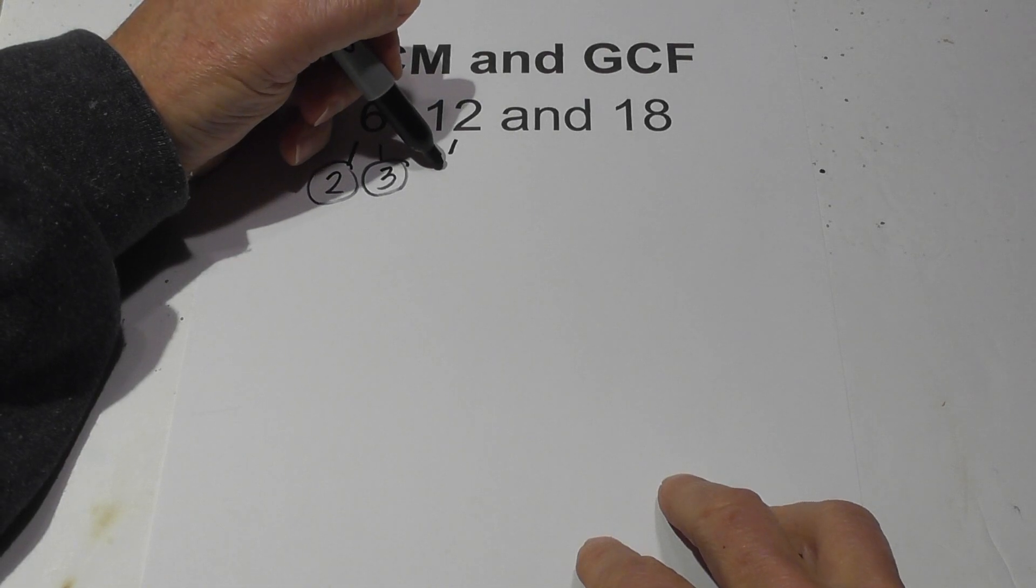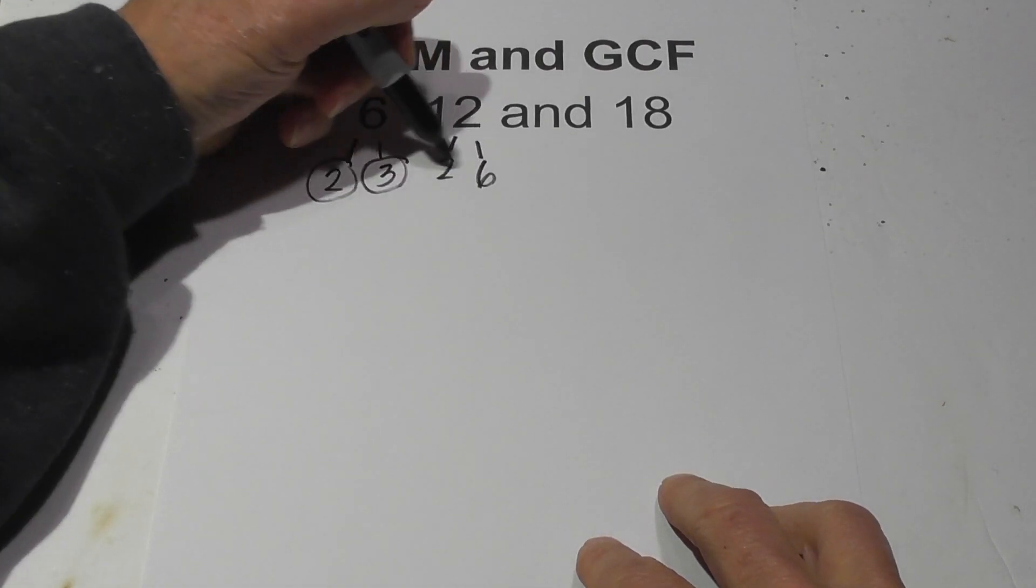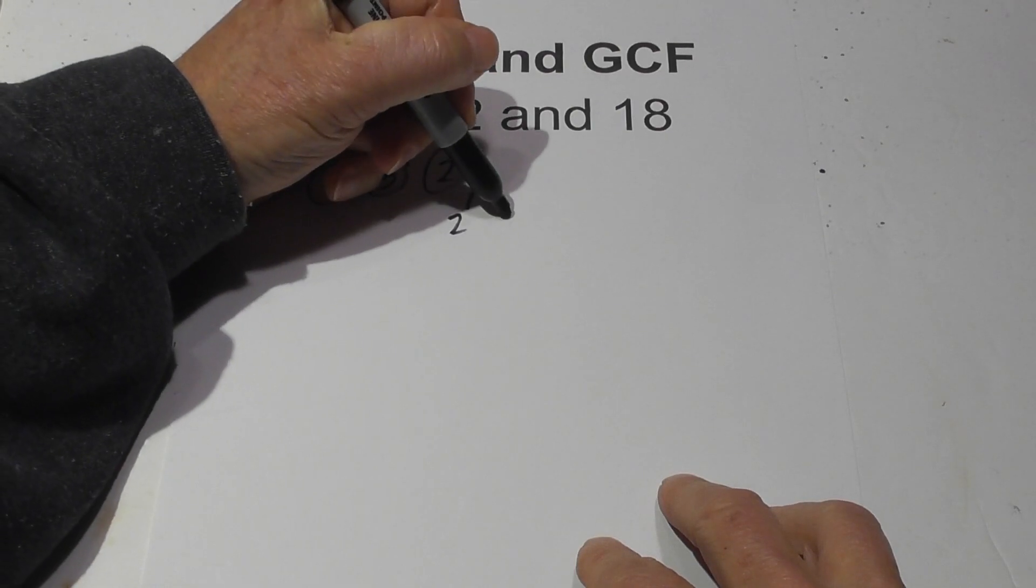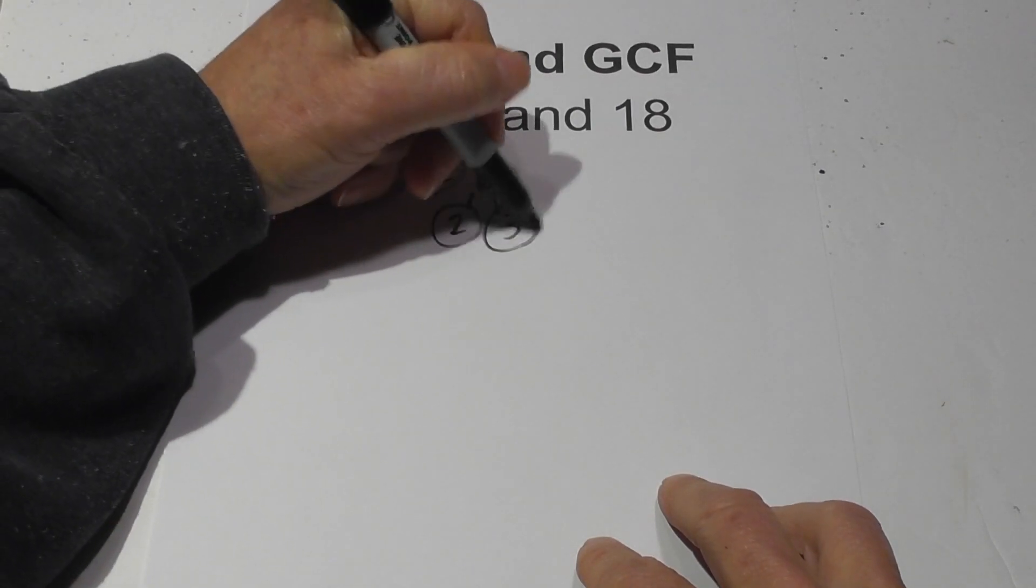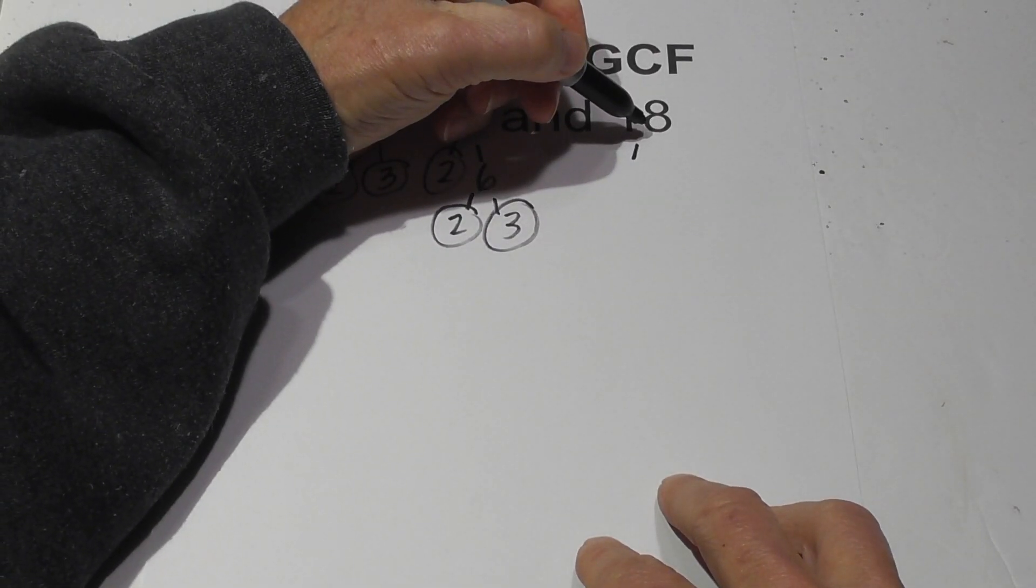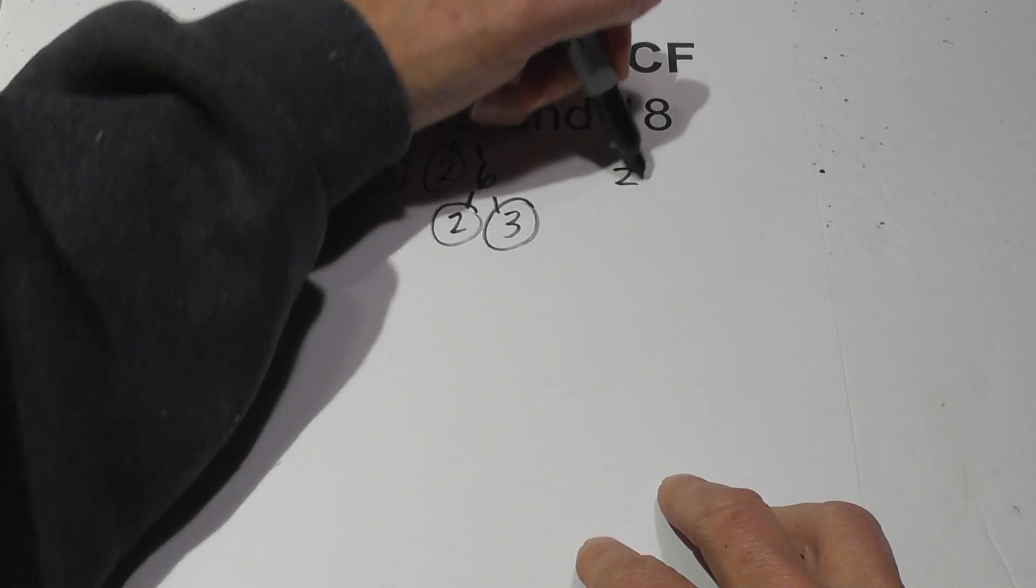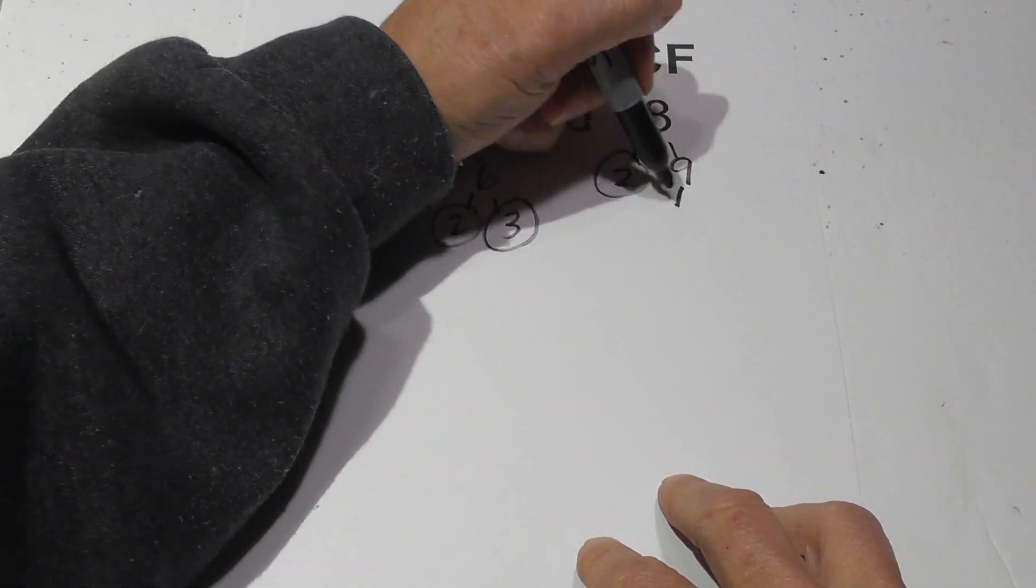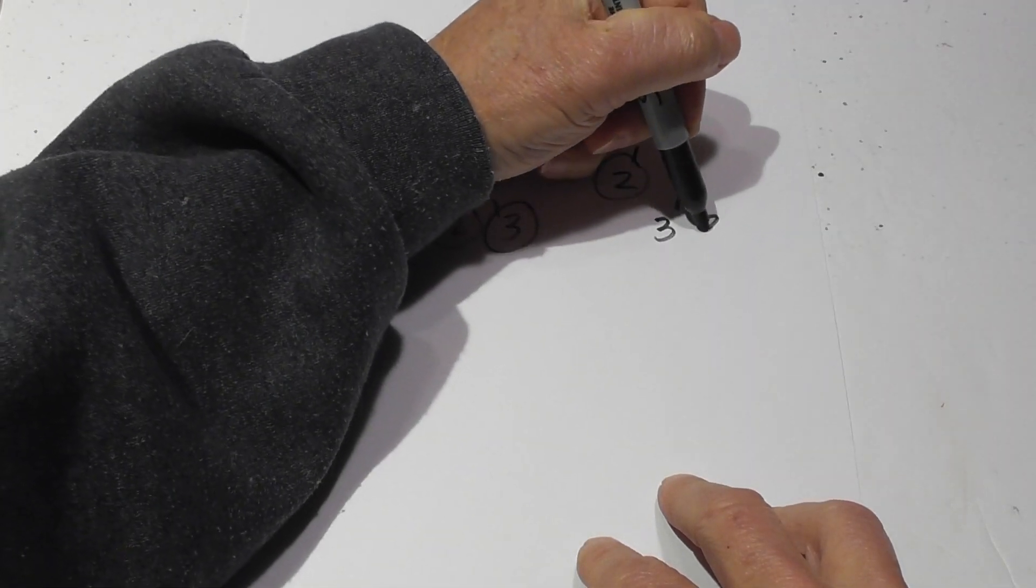12, you go 2 times 6, circle the 2 because it is prime, and then 2 times 3. And then finally 18, let's see, that's 2 times 9, circle the 2, and then 3 times 3.